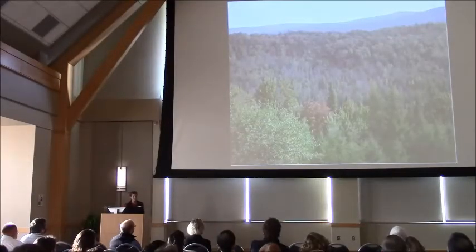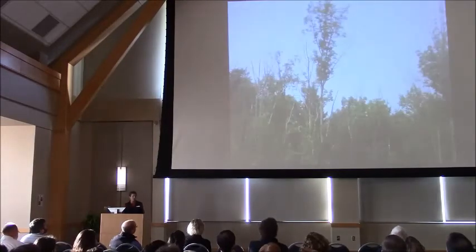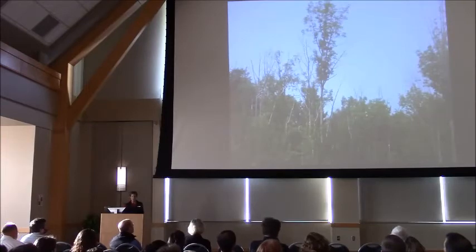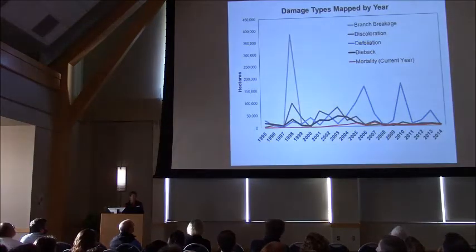When you look at just the mortality, our most severe kinds of things that we map are the mortality and the tree diebacks are the ones that indicate the most severe damage to the forest. We map less of those than anything else. Those are the red and the black lines on this graph, and the good news is that we don't map much of them every year.